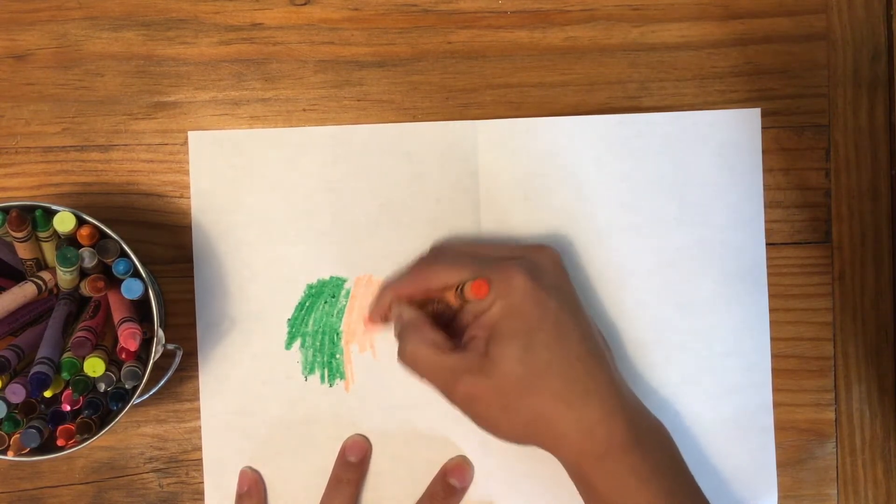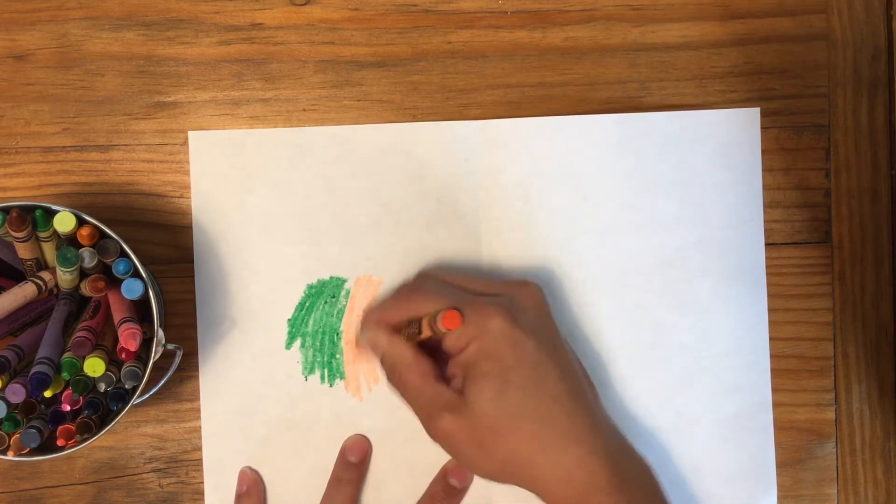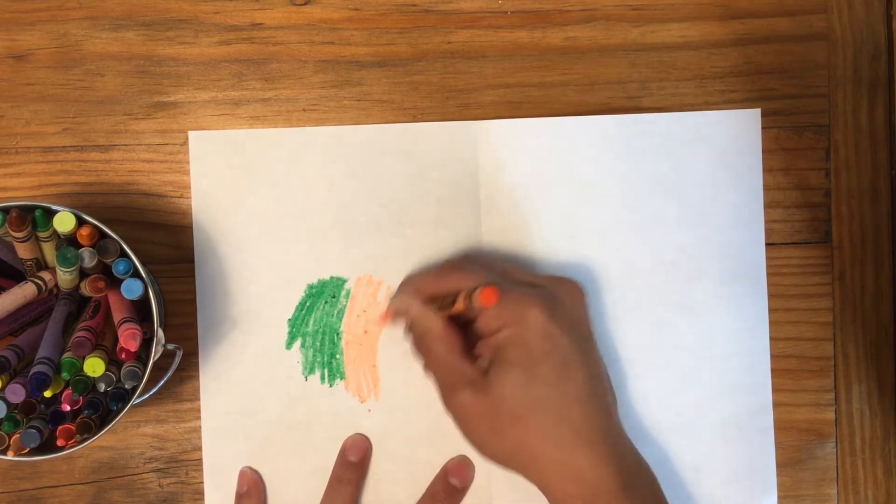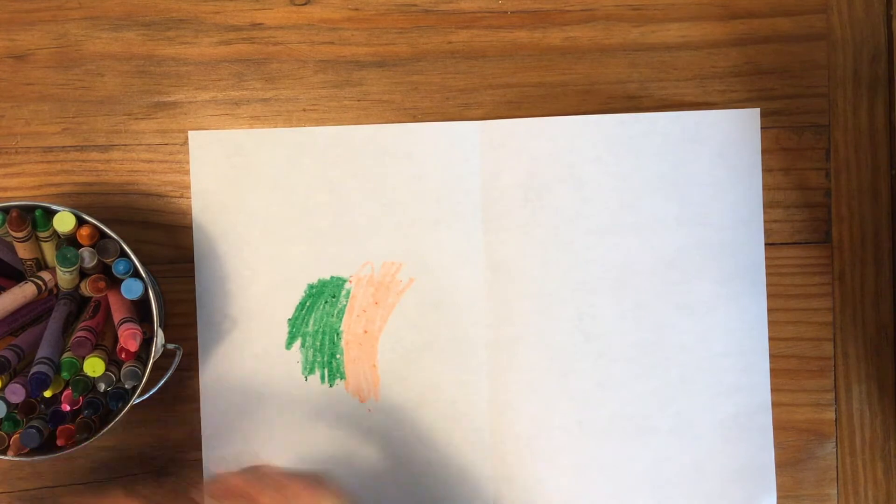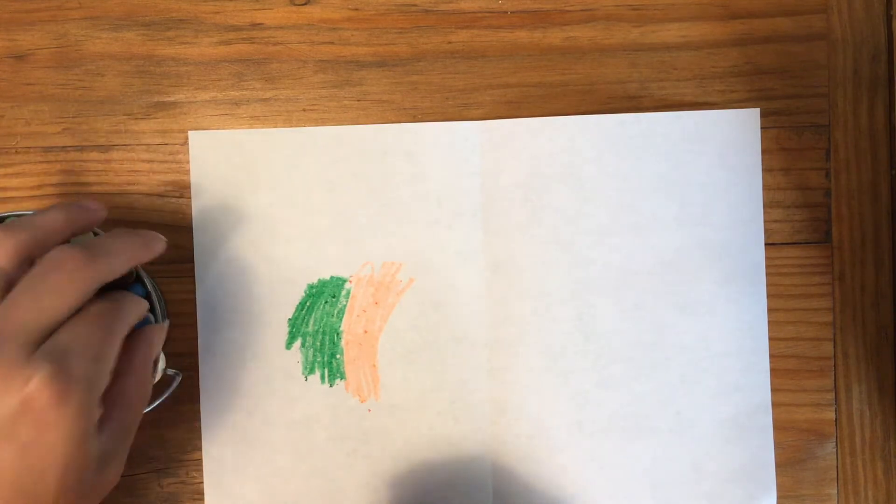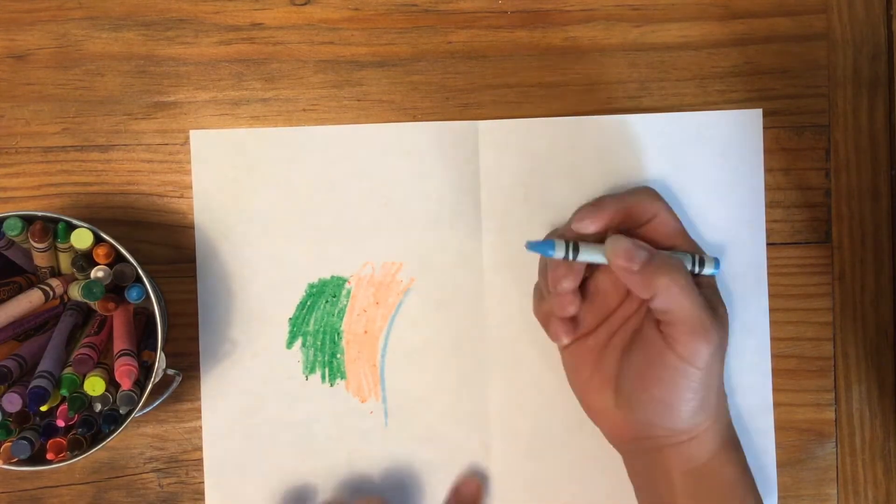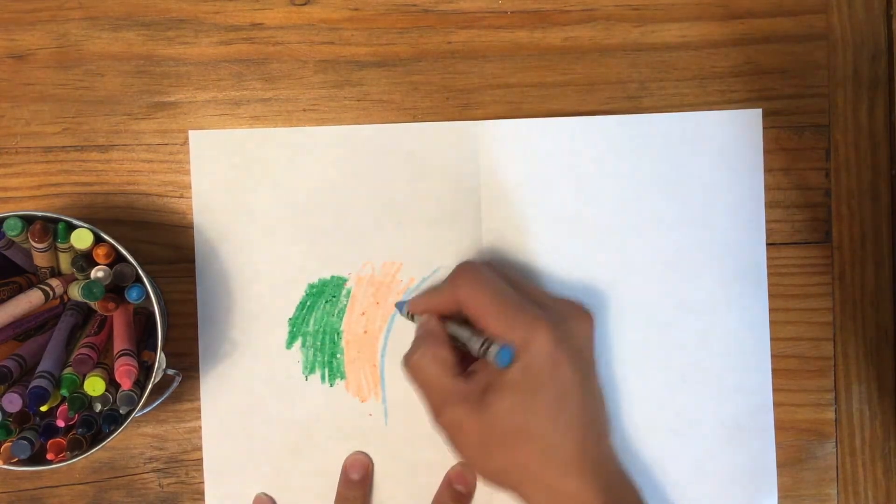You can create any kind of design you want. You can do stripes, circles, or just splotches of color, but you want to make sure that you press really hard and fill up this entire side.